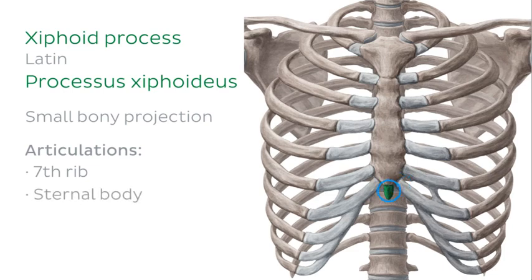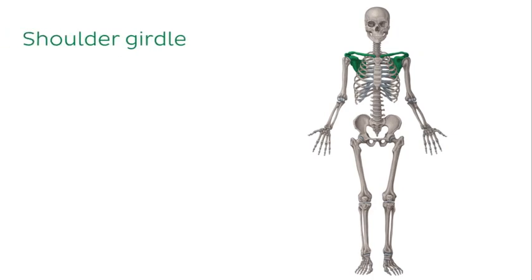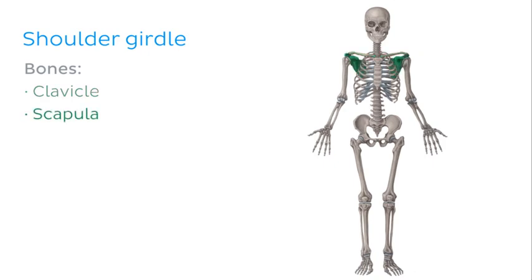Now that we've looked at the components of the axial skeleton — the skull and the trunk — let's move on to the appendicular skeleton starting with the shoulder girdle. The shoulder girdle is made up of two bones: the clavicle and the scapula.